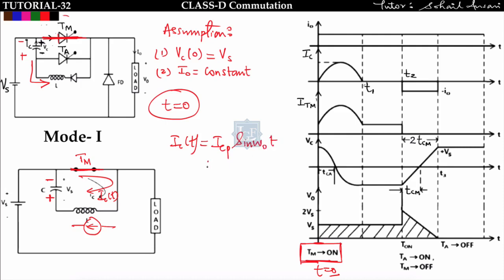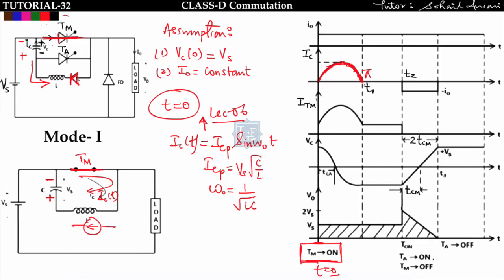Where ICP = Vs·√(C/L) and ω₀ = 1/√(LC) — as explained in Lecture 6 for a discharging LC circuit. The capacitor current is sinusoidal from 0 to t1. After π, the current does not reverse because of the diode connected in series with the inductor and capacitor. So ic(t) = ICP·sin(ω₀t) only up to π.